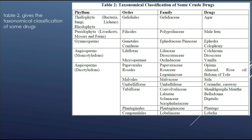In the phylum or kingdom angiosperms, the class dicotyledons contains order Papaverales — in that, family papaveraceae, and the drug present is opium. In the same kingdom, order Rosales, family rosaceae — contain almond or rose oil. In the same order, the family Leguminosae — drug present is balsam of tolu. In the same class dicotyledons, order Malvales, family malvaceae — drug present is sida. In the order Umbelliflorae, family umbelliferae — the drugs present are coriander or caraway.